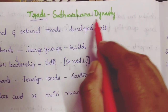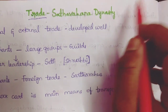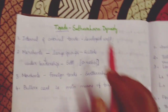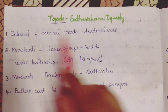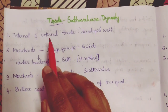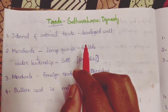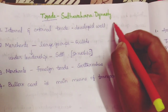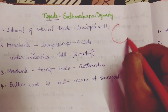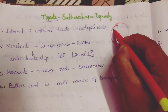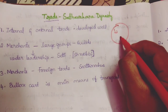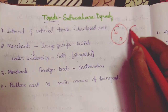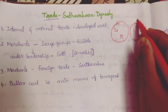Trade during the Satavahana dynasty — how trading took place during the Satavahanas' period. In the Satavahana period, both external and internal trade were developed well. Internal trade is trade within the kingdom, country, or dynasty. External trade is trade with foreigners.